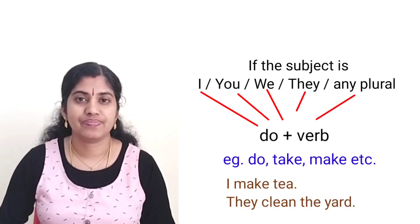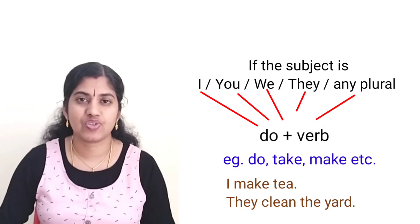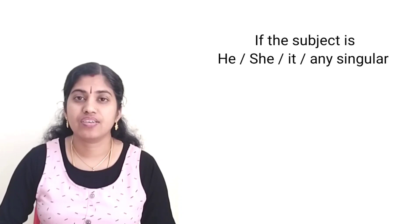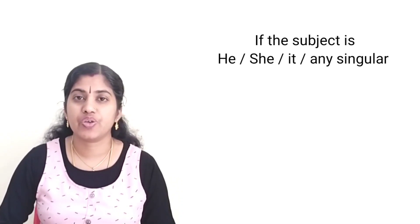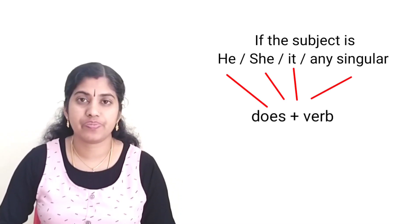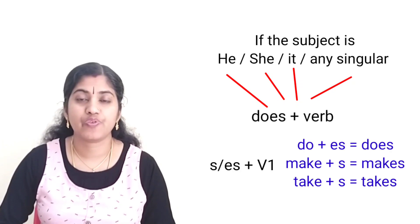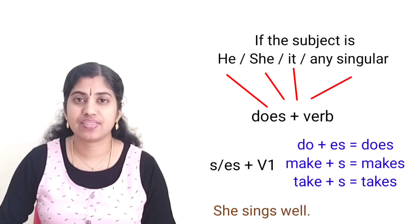Examples: do, take, make, etc. If the subject is he, she, it, or any singular, we use does plus verb — that means we add -s or -es to the verb. For example: does, makes, takes.